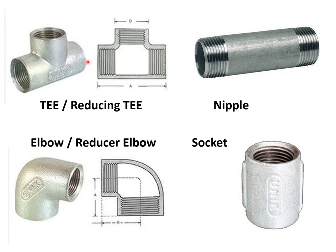This is a T fitting. This is the cross section of this T and this is the external image. If both diameters are the same, then we call it a standard T. If one particular diameter is shorter than the other, then we call it a reducing T. For example, one diameter may be 25 mm and another may be 15 mm — then we call it a 15-25 reducing T.